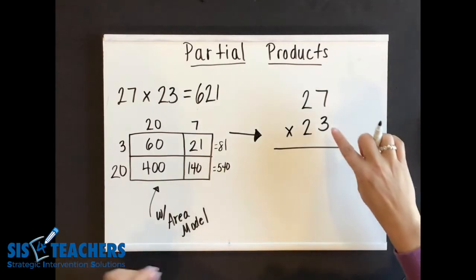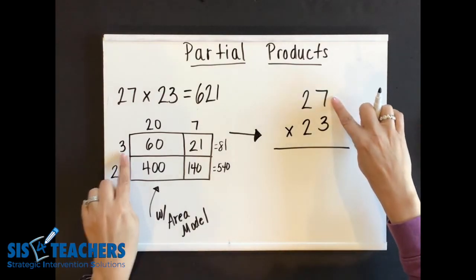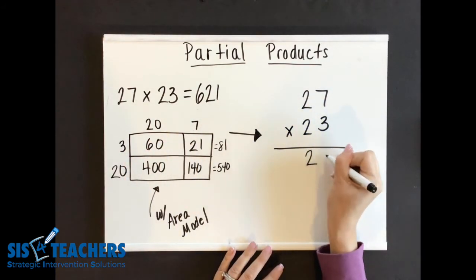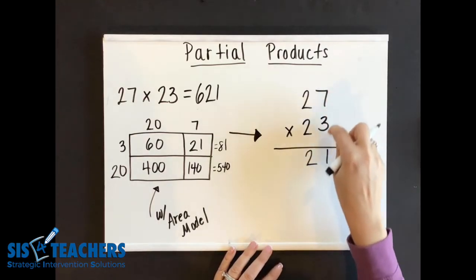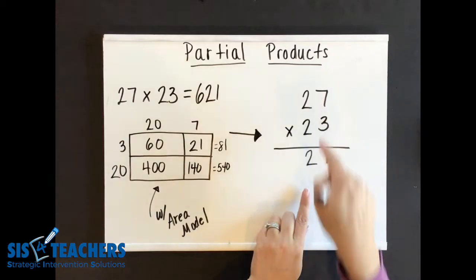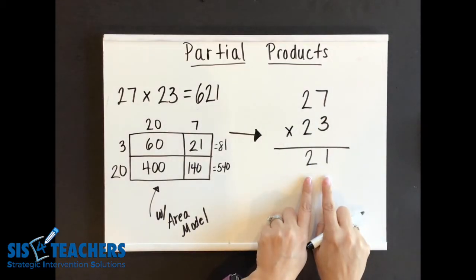So if we start off first looking at our seven times three, which we saw the seven times three over here, we're going to just put all of our totals at the bottom. So we know that seven times three equals 21. It's really important that you're lining up your numbers accurately as you're doing it.